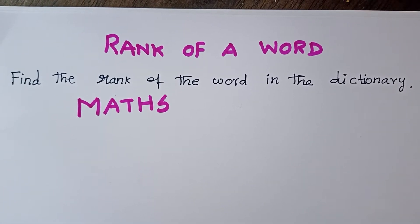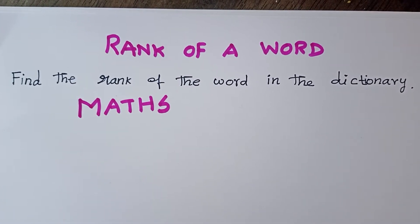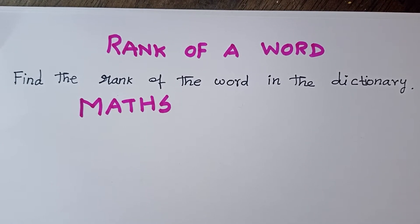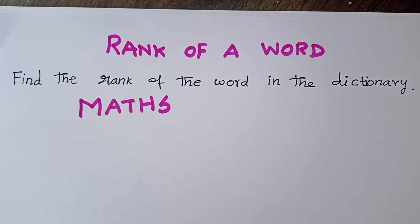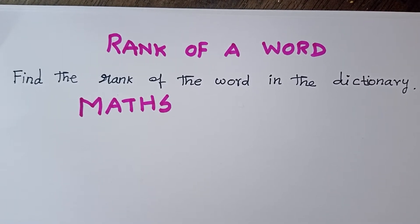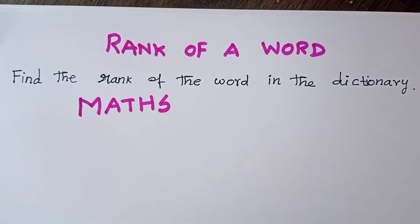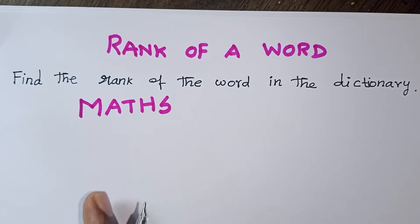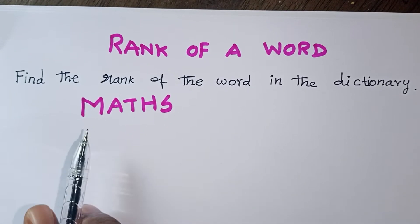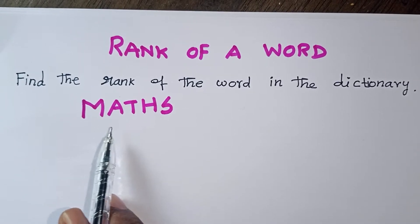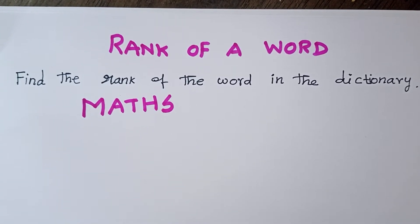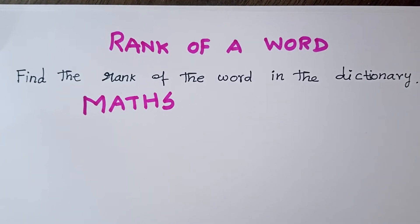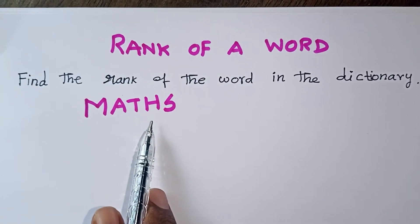Hi students. In this video, we will see the rank of a word. Ranking of a word in the dictionary is used for normal permutation purposes. We will see how to find where a word appears in the dictionary. We will learn two methods.